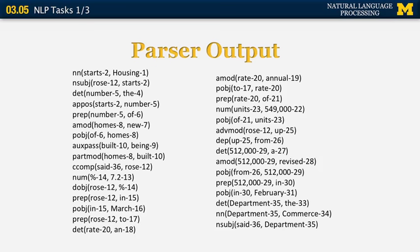Let's look at the sample output of a dependency parser. As you can see, every line connects two words. The words are numbered from one to 36, which is the last word in the sentence. If you look at the pairs of numbers in each dependency, you can reconstruct the entire dependency structure of the sentence.